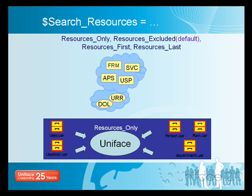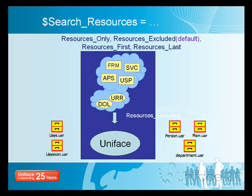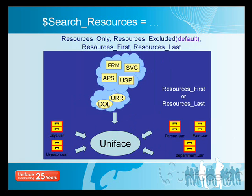With resources only, Uniface will only look at the UAR files for the files. With resources excluded, which is the default, Uniface will only look for the traditional compiled components. With resources first or resources last, Uniface will either look at the UAR files first and, if it doesn't find the components, fall back to the traditional mechanism — or the other way around, looking for the traditional compiled components first and then falling back to the UAR files. The default is resources excluded.